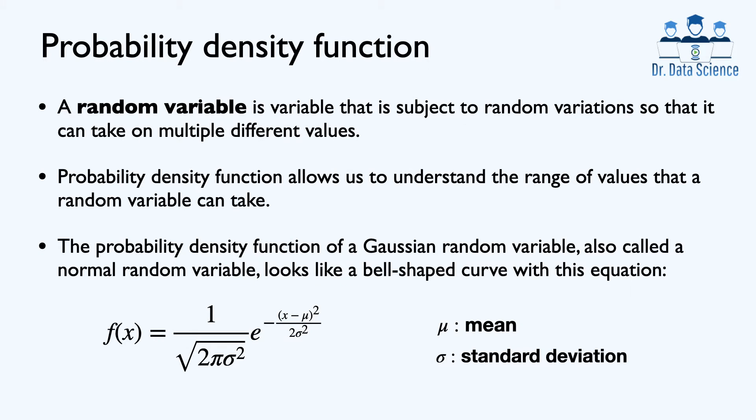To start, let's look at the definition of a random variable without using mathematical equations. In simple terms, a random variable is a variable that is subject to random variations so that it can take on multiple different values. For example, temperature is usually a random variable because it's always changing over a period of time.